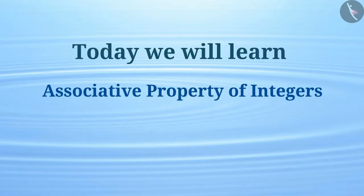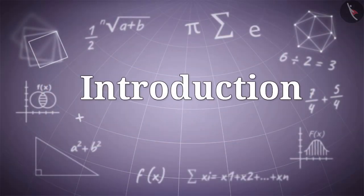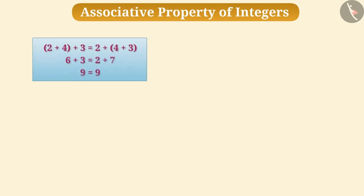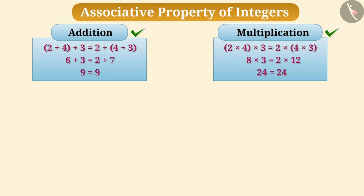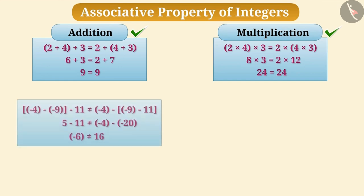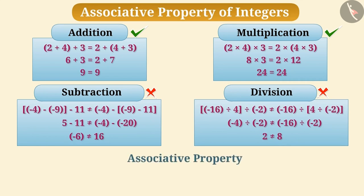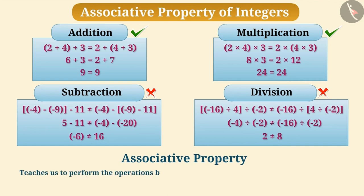Today we will learn the associative property of integers. We can add or multiply three integers by grouping them in any order, but we cannot do subtraction or division by grouping them in any order. This is called the associative property of integers. This property teaches us to perform operations by grouping numbers with the help of brackets.